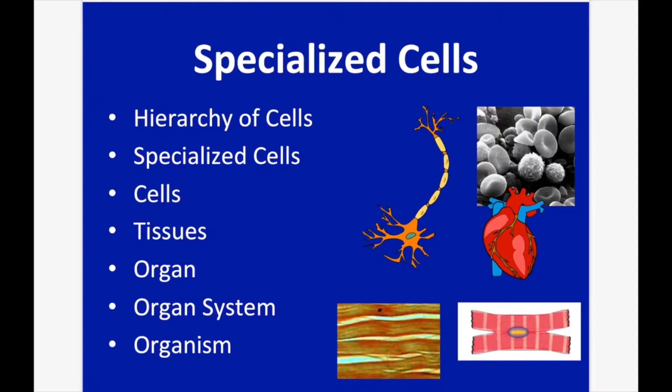Specialized Cells. In this lesson we are talking about the hierarchy of cells: specialized cells, cells, tissues, organs, organ systems, and then the organism in its entirety.